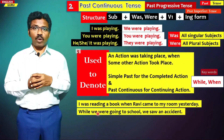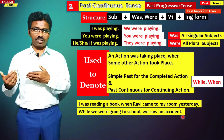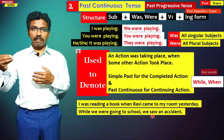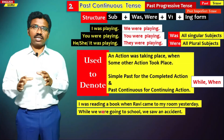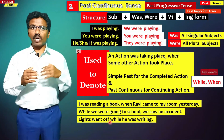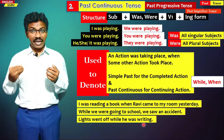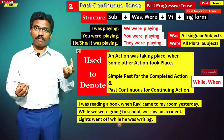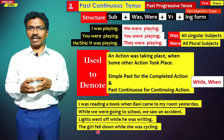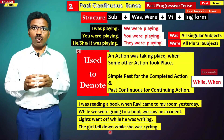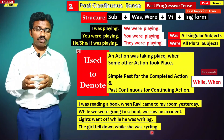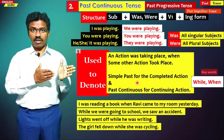While we were going to school, we saw an accident — we saw is verb 2, so it is simple past tense; while we were going is past continuous tense. Lights went off while we were reading — went off is verb 2, simple past tense; while we were reading is past continuous tense. The girl fell down while she was cycling — fell down is simple past tense; while she was cycling is past continuous tense.